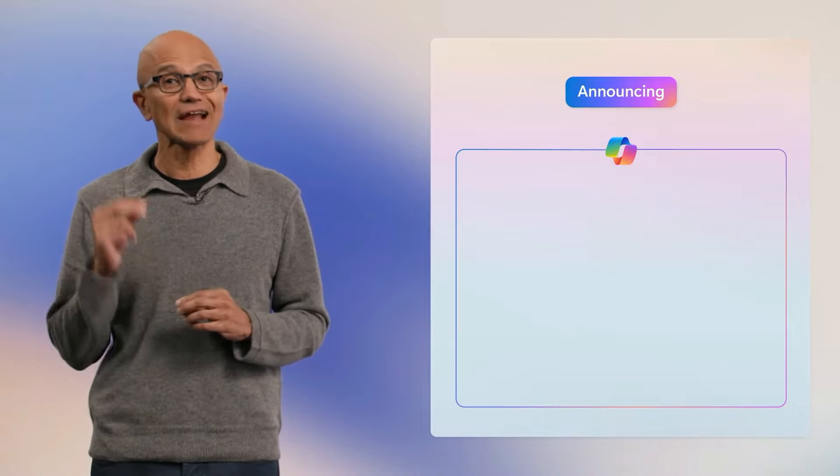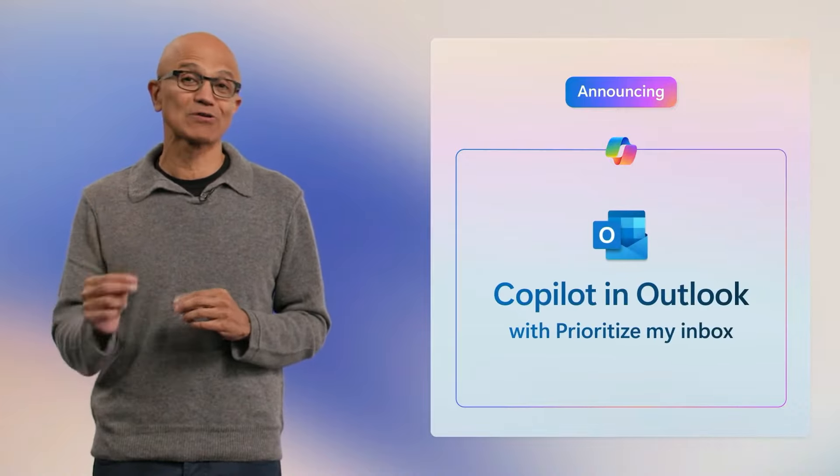Today we're going to talk about Microsoft Copilot. They released an updated version last week, and they call it Wave 2. Copilot is the name of Microsoft's AI initiative, embedding AI into the Office suite. Wave 2 for Microsoft Copilot is so much more than just PowerPoint, but today I'm going to focus on PowerPoint because I think it's truly magic.